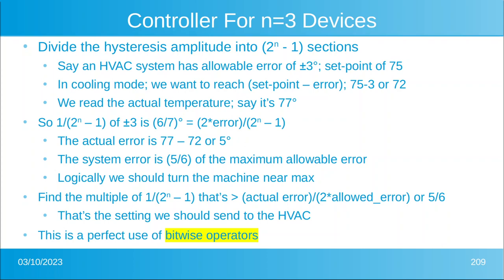Say we read the actual temperature and it's 77 degrees. One over (2-to-the-n minus 1) is one-seventh. The formula is: 2 times the allowable error divided by (2-to-the-n minus 1). The actual error — meaning the distance from where we are to the minimum allowable temperature of 72 — is five degrees. So the system error is five-sixths of the maximum allowable error, meaning we should turn the machine near maximum.